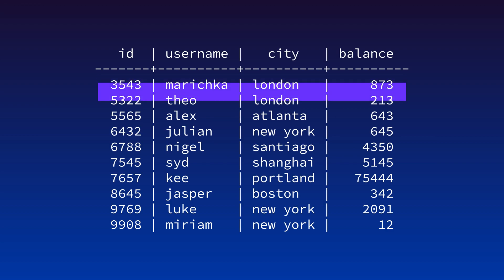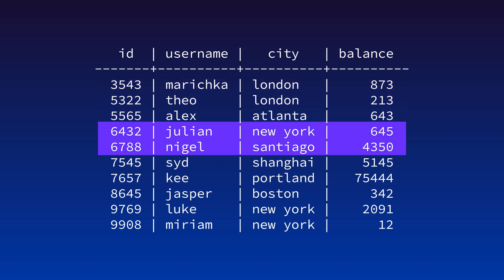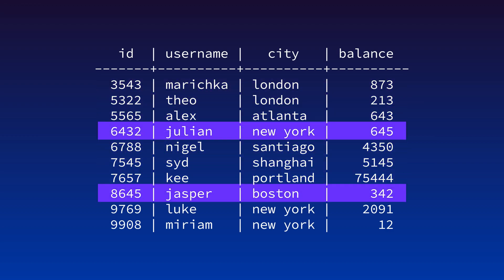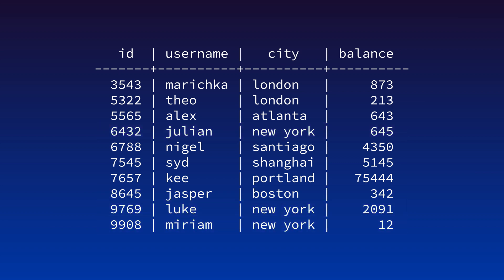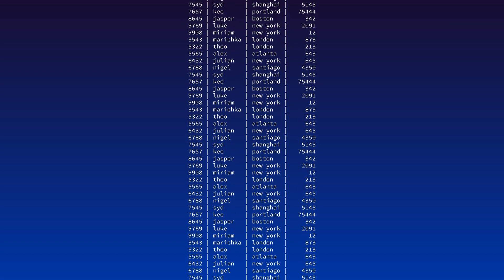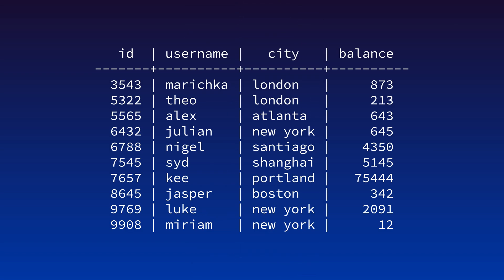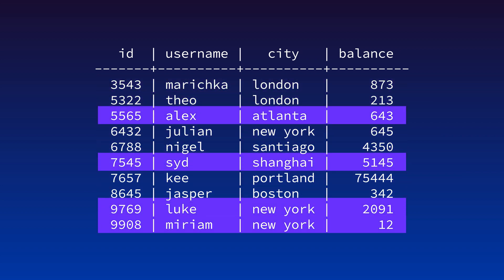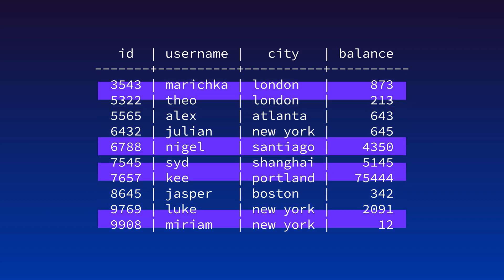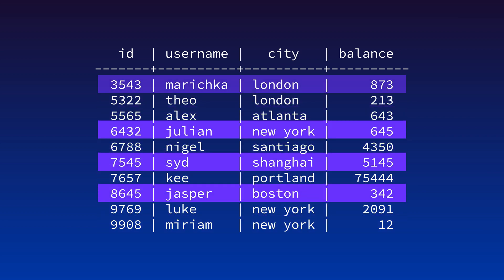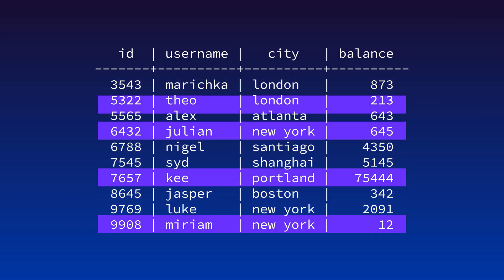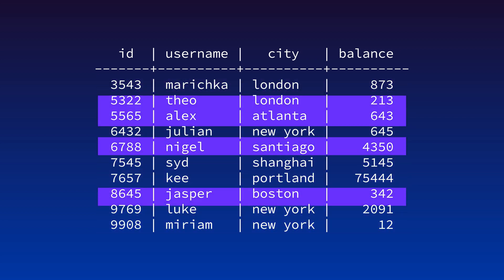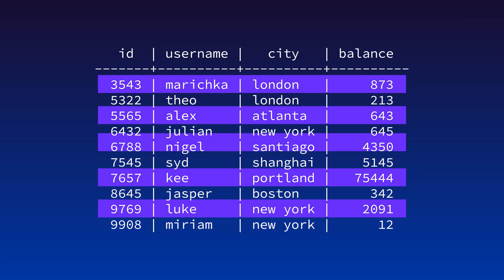Without any indexes, our database has to scan every row in the table. This example table only has 10 rows, so a full table scan like that isn't a big deal. But what if this table had 10 million rows? Running a single query like that is going to consume a lot of resources, and if this table is used by an application, it could have thousands or tens of thousands of similar queries to process within a short time span. That's going to eat up a lot of compute resources and slow down the experience of using your application.